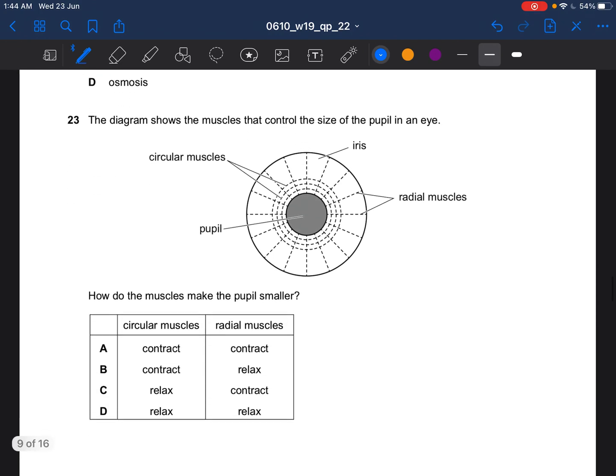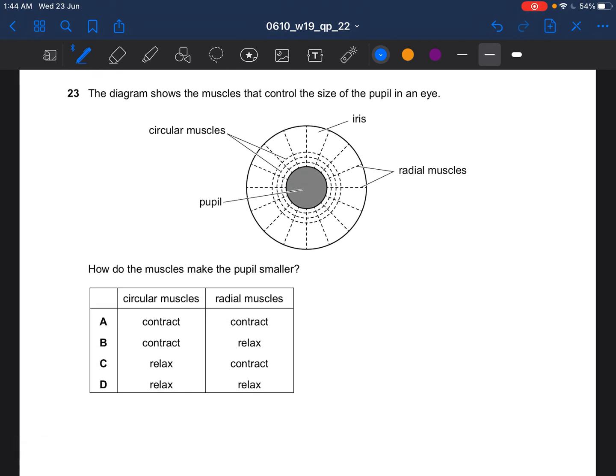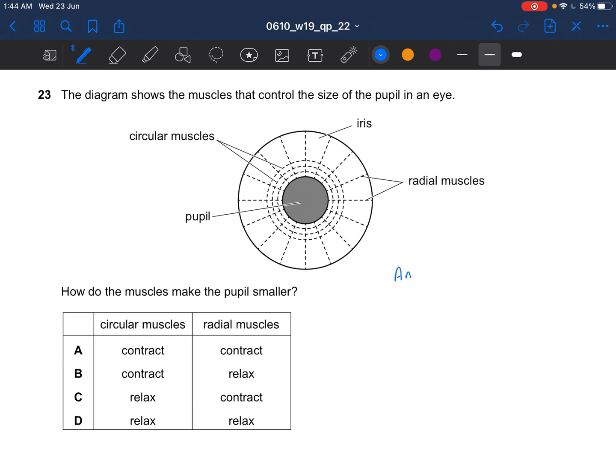Next question, the diagram shows the muscles that control the size of the pupil in an eye. How do the muscles make the pupils smaller? Circular and radial muscles, it would be like an antagonistic action where when one contracts, the other one will relax. So to make the pupils smaller, the circular muscles contract and the radial relax. So the answer would be B.